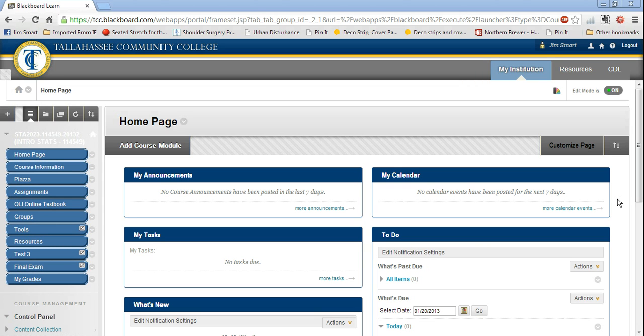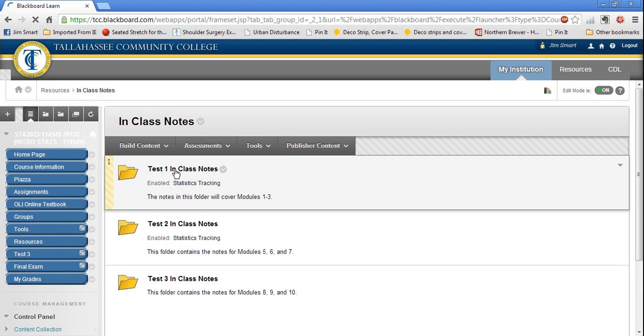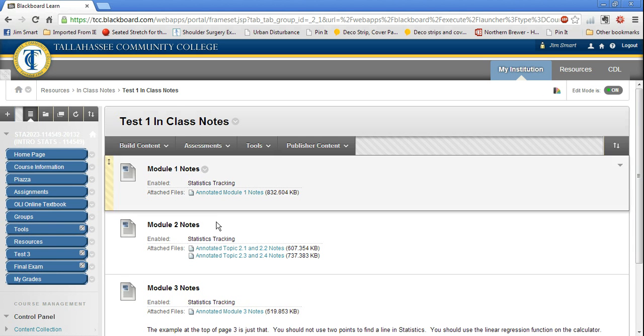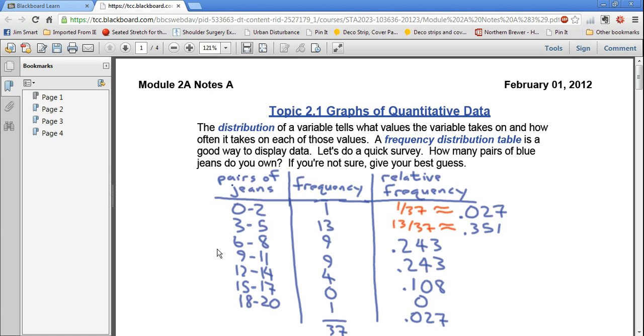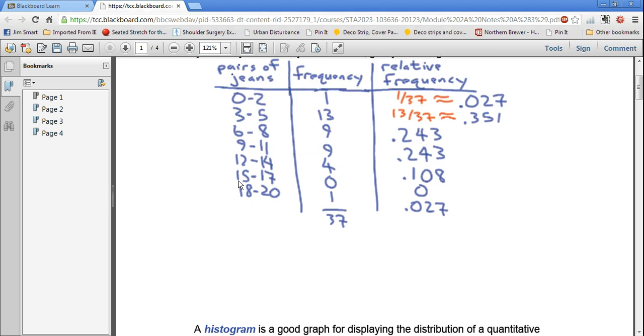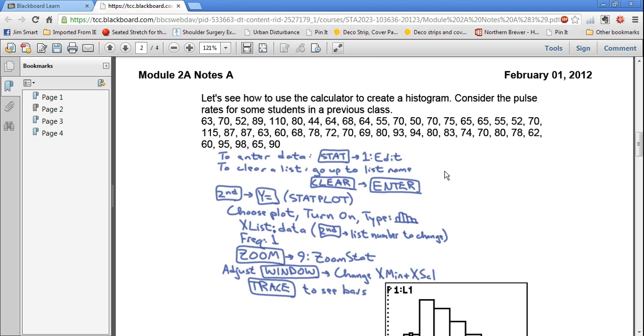So let's take a look at an example from the notes. Go over to resources on your Blackboard page, click on that, and then in-class notes. These are from my on-site classes at TCC. Test 1 notes, and then we'll go down to the module 2 notes, the annotated topic 2.1 and 2.2 notes. That will open in a new window, and I'm going to scroll down here to the second page and look at these heart rates that were from some students in a previous class.